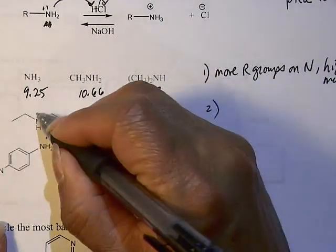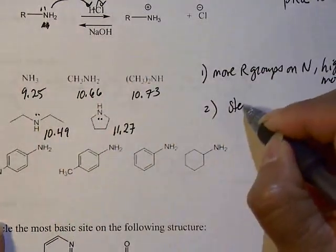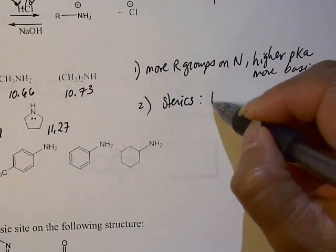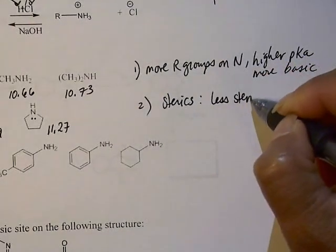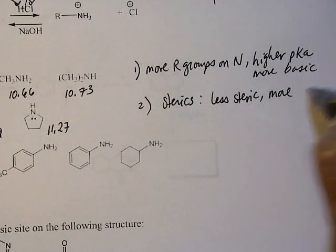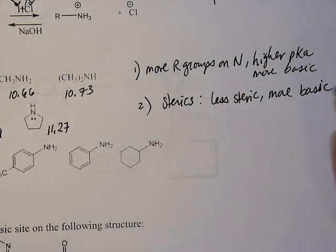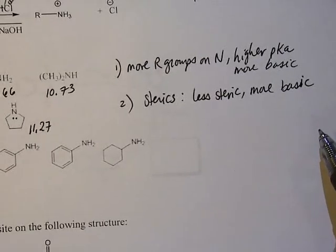All right. What is the difference? The difference is sterics. All right. So less steric, more basic, as is seen with a five-member ring here.